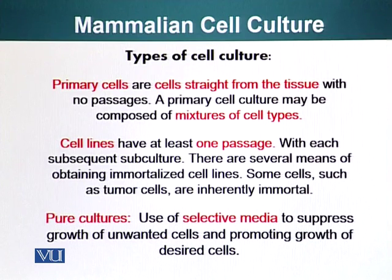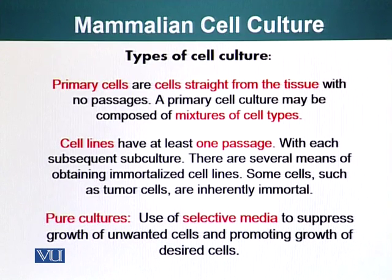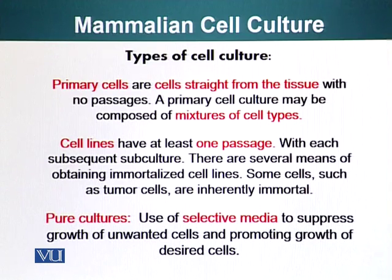Cell lines have at least one passage. You will most likely be dealing with cell lines in your lab. There are several means of obtaining immortalized cell lines — cells from these cell lines can grow, divide, and multiply indefinitely. As we talked about with oncogenes and neoplastic transformations, cells have a clock in them and can count how many times they have divided. Most cells divide about 50 times, after which they cannot divide or function normally. However, cancer or tumor cells can divide indefinitely — those are the immortalized cell lines people use in the lab for different purposes.